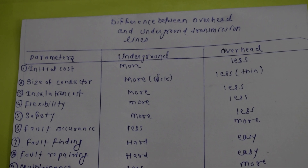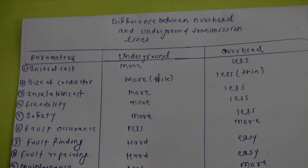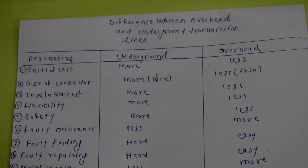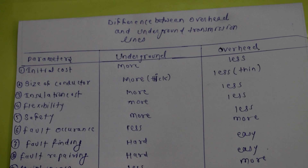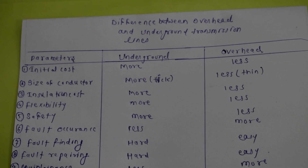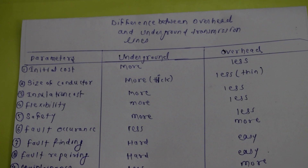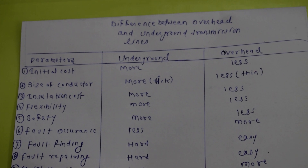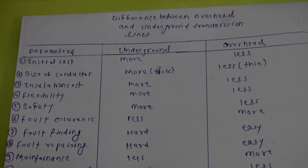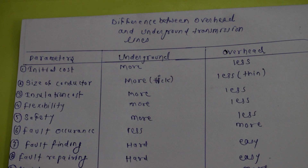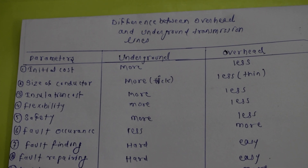The third point is the insulation cost. The insulation cost in underground is more compared to overhead because we have to give it more protection, which increases the insulation requirements.